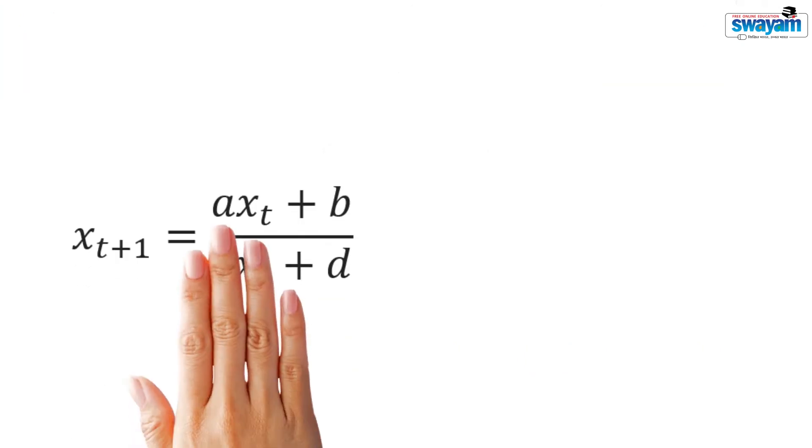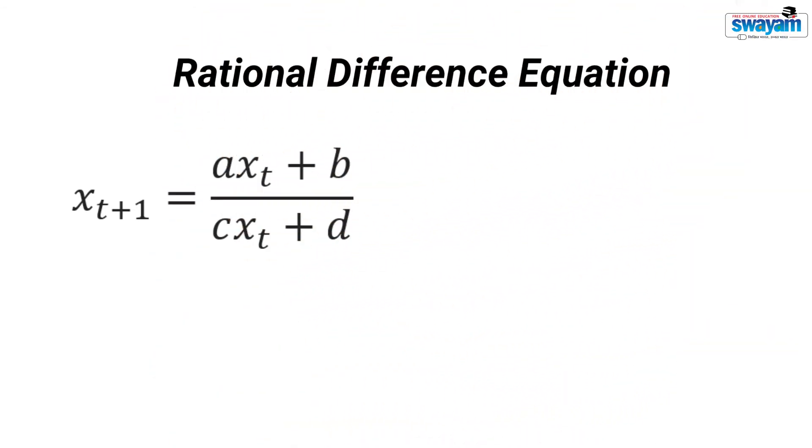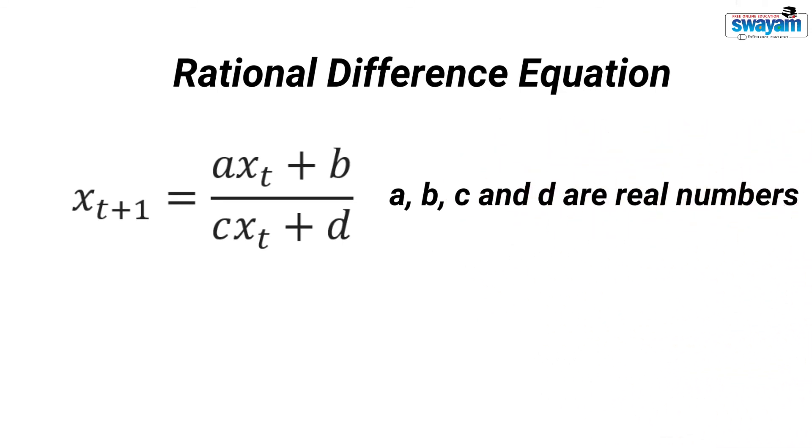This is the general form. This is a first order rational difference equation. A rational difference equation is in the form of a ratio.